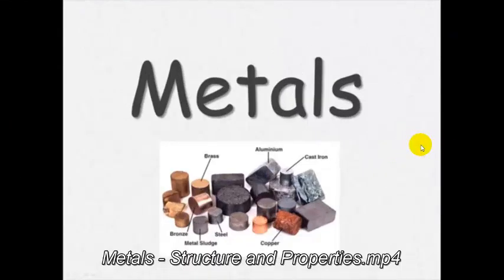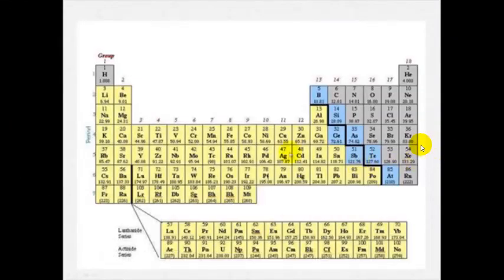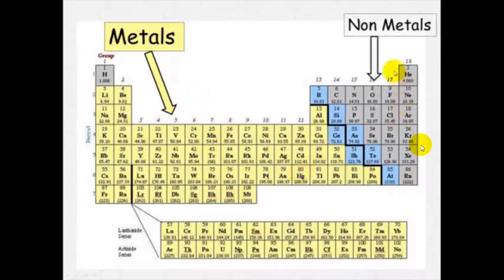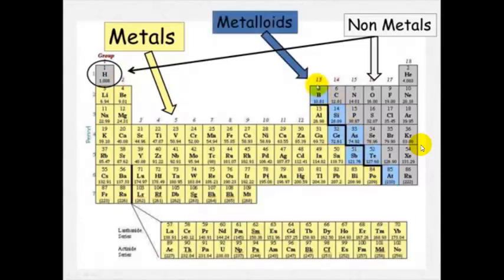Metals. When you look at the periodic table you'll notice that the majority of elements are metals and these are all the ones in the yellow. The ones in the grey over here on the right hand side are the non-metals and don't forget that hydrogen over in group 1 is also a non-metal. And on the staircase here separating the metals and the non-metals we have the metalloids.